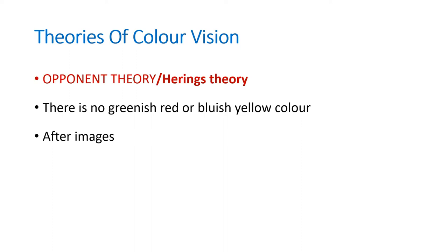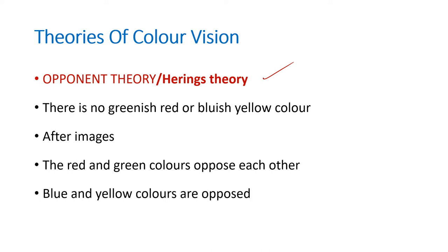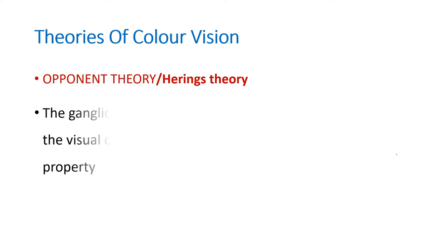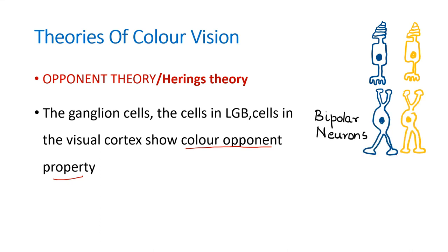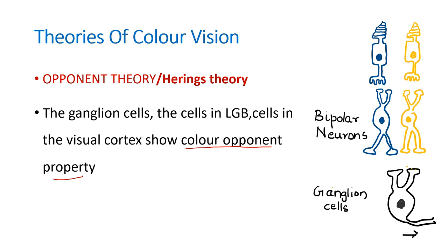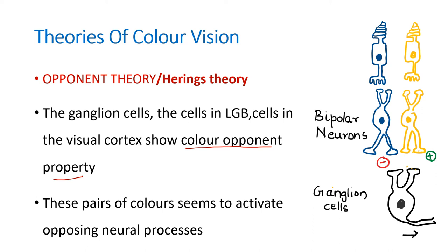This led to the opponent theory, also called Hering's theory. According to this theory, red and green colors oppose each other, and blue and yellow colors are opposed. The ganglion cells, cells in the lateral geniculate body, and cells in the visual cortex show color opponent property. For example, yellow cones might stimulate a ganglion cell while blue cones inhibit the same ganglion cell. These pairs of colors activate opposing neural processes, which is why they are called opponent colors. Red-green and blue-yellow are the opponent color pairs, and from ganglion cells onwards they show color opponent property.